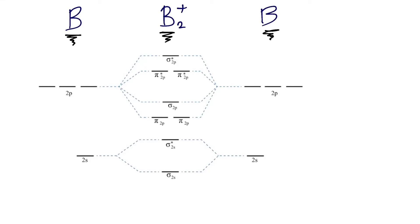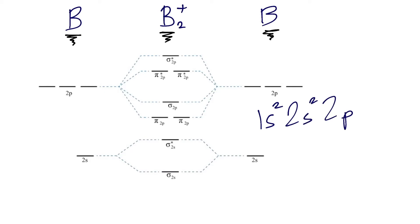How do you make the molecular orbital diagram for the B2+ ion? Start by writing out the highest energy atomic orbitals associated with each individual boron atom. We can see these by writing out the electron configuration for boron. Looking at the periodic table, the electron configuration for boron is 1s2 2s2 2p1.